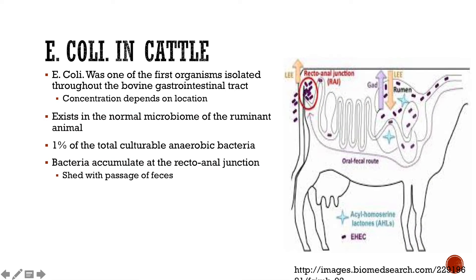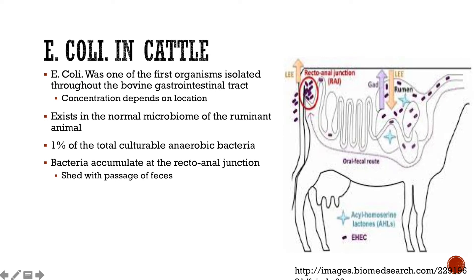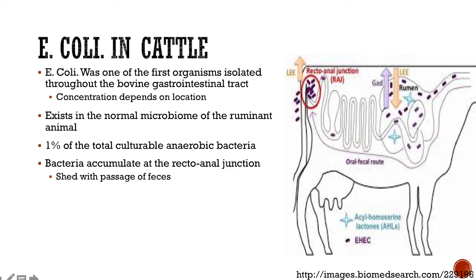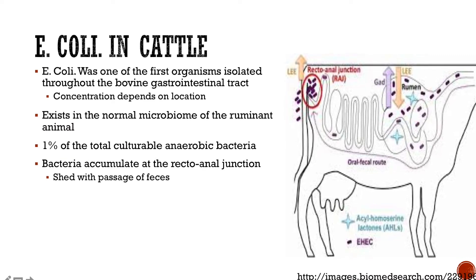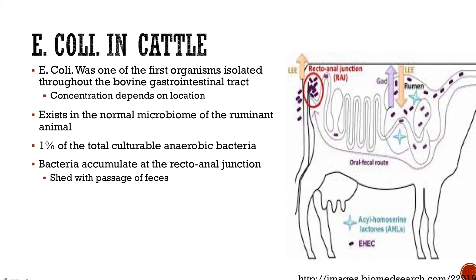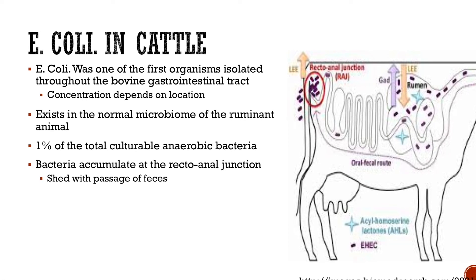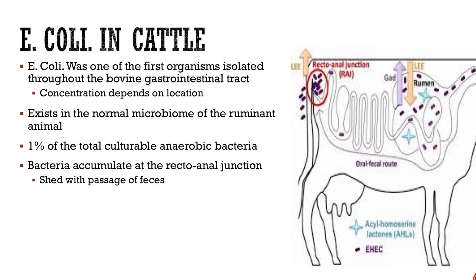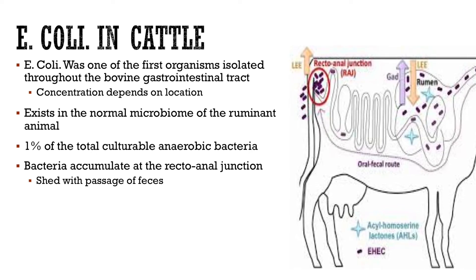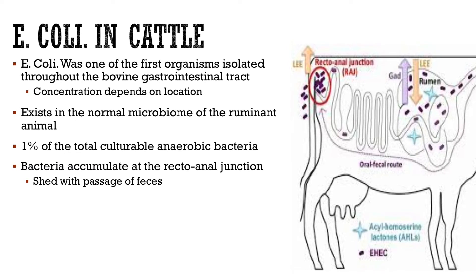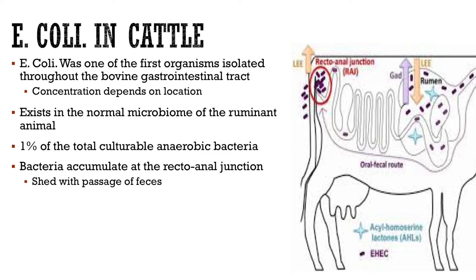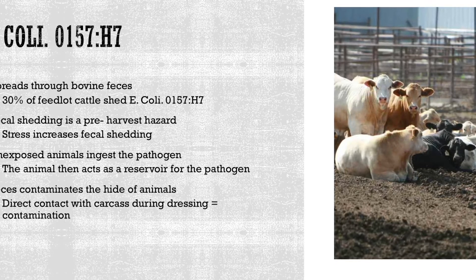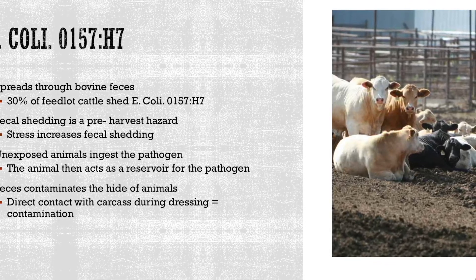In cattle, most E. coli research has been limited to the total or generic E. coli concentration. E. coli was one of the few bacteria types isolated throughout the entire bovine gastrointestinal tract in early research, although now it has been shown that total bacteria counts can be highly variable between anatomical locations within the tract. Results indicate that generic E. coli composes 1% of the total culturable anaerobic bacteria. The majority of the bacteria accumulate at the recto-anal junction of the animal, as seen in the image to the right. The cow intakes enterohemorrhagic E. coli, where it travels throughout the gastrointestinal tract and eventually accumulates for shedding. E. coli O157H7 has been proven to spread through bovine feces, and as many as 30% of feedlot cattle shed O157H7.